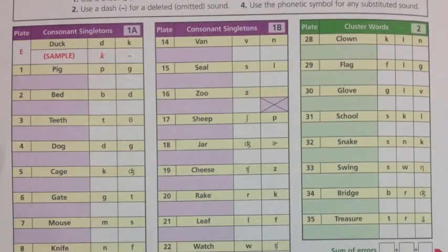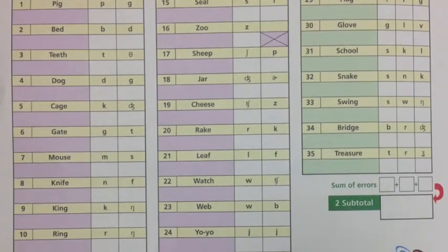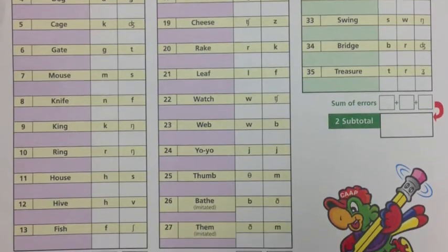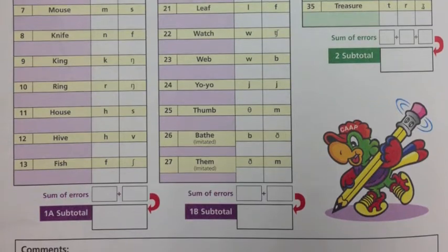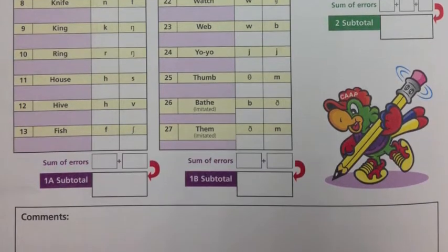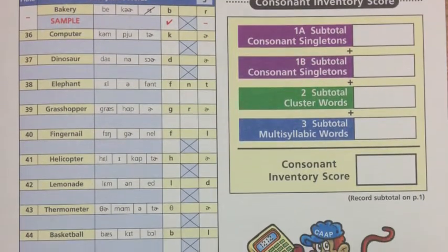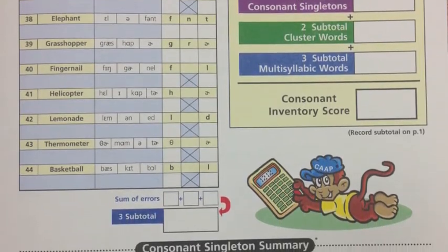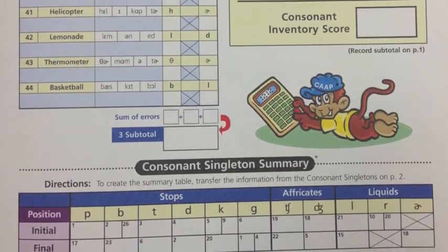The second page is where the clinician records the responses for the consonant inventory, including consonants, singletons, and cluster words. The bottom of the page includes a comments section where the clinician summarizes the client's speech inventory. The third page provides space for recording responses on multisyllabic words. At the bottom is the summary table, which the clinician fills out according to the information from the consonant singletons on the previous page.